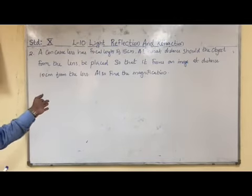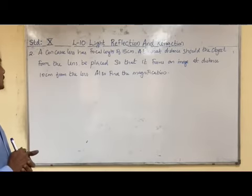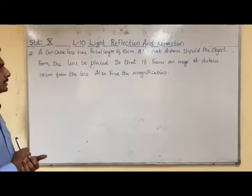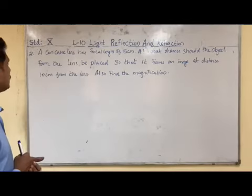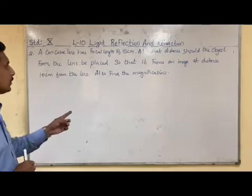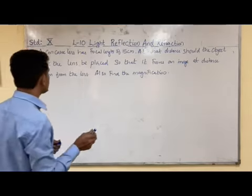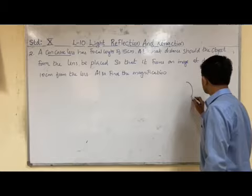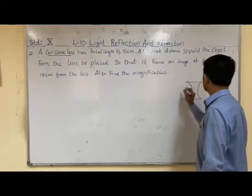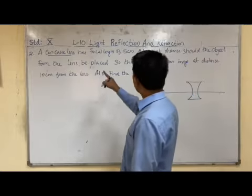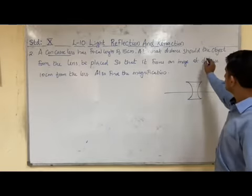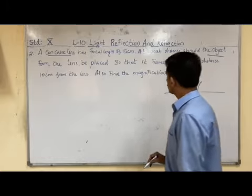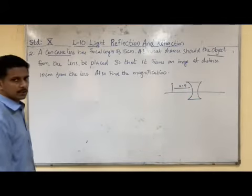Now we are going to discuss another question. A concave lens has a focal length of 15 cm. At what distance should the object be placed from the lens so that it forms an image at a distance of 10 cm from the lens? Also find the magnification. In this case, we have to find u — the object distance — such that the image forms 10 cm from the lens.